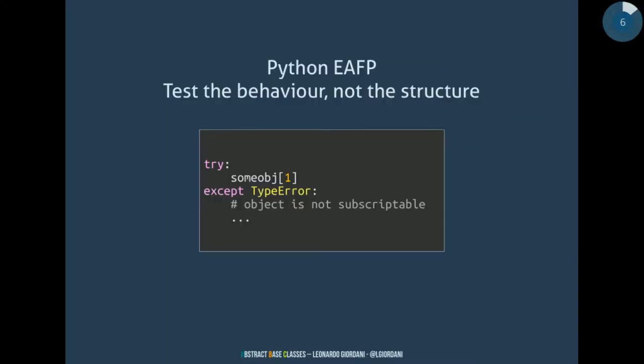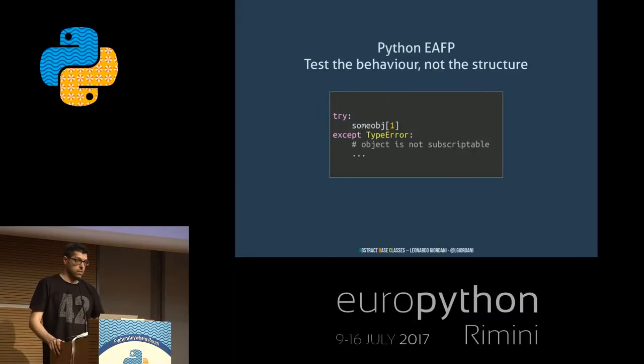This is a reason why in Python we push the EAFP paradigm a lot — it's easier to ask for forgiveness than permission. So we try and except. We try to use something and then catch the exception, because we are not checking if some object is subscriptable. We just try it, and if it doesn't work, we do something. We do this because we are interested in the behavior.